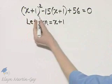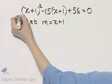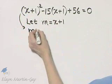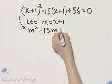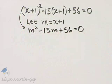Now, let's go through, and every time we see x plus 1, we'll write m. So, I have m squared minus 15m plus 56 is equal to 0.